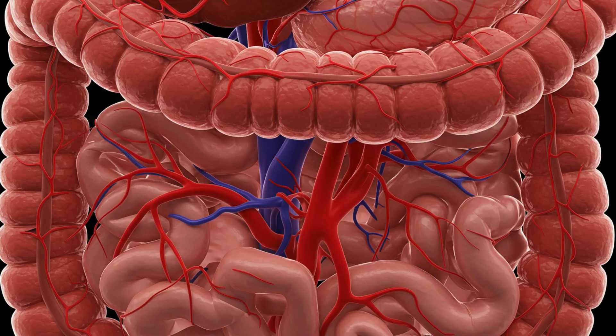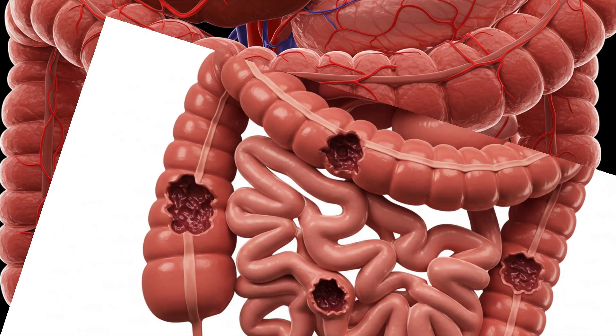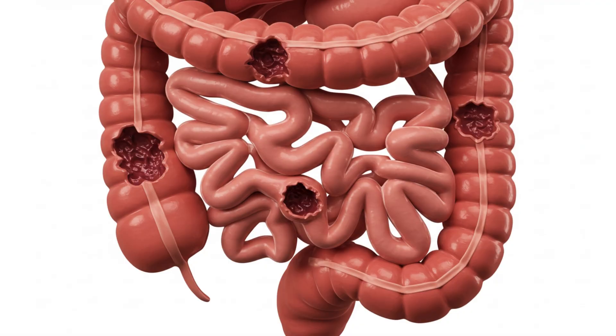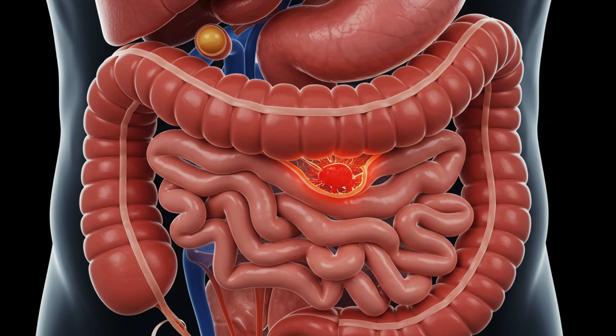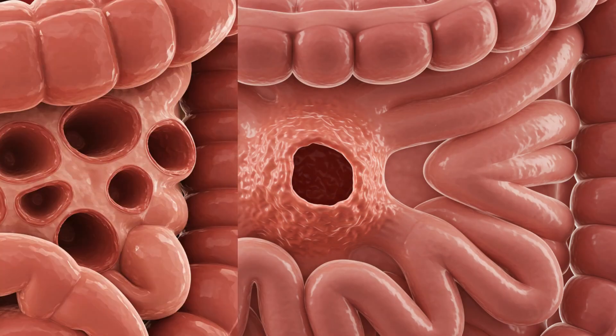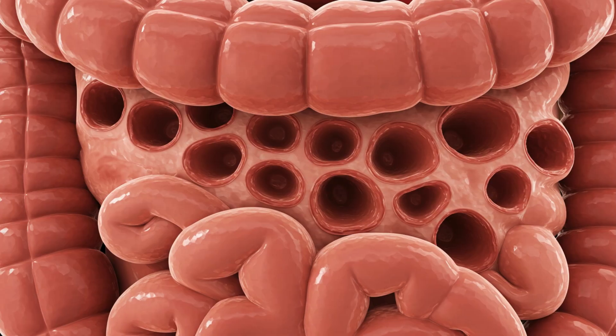Blood vessels called vasa recta supply blood to your colon. Although the cause is unknown, diverticulosis is associated with constipation, which causes increased pressure inside your colon. Increased pressure may cause the mucosa and submucosa to herniate through a weakened area of the wall of your colon and form a diverticulum.